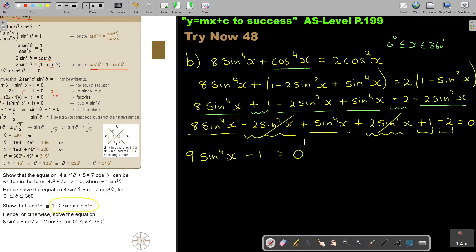Wow. And now I have the difference between two squares. So if I break it up, 3 sin 2x minus 1, 3 sin 2x plus 1, that is equal to 0. So then, if I put this equals 0, or this equals 0. So it's going to be 3 sin 2x minus 1 equals 0, or 3 sin 2x plus 1 equals 0.